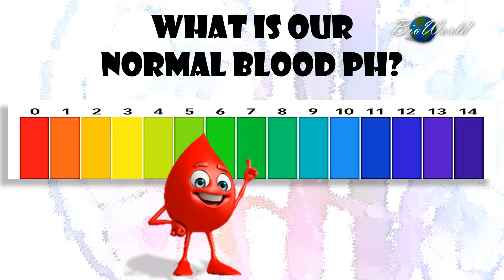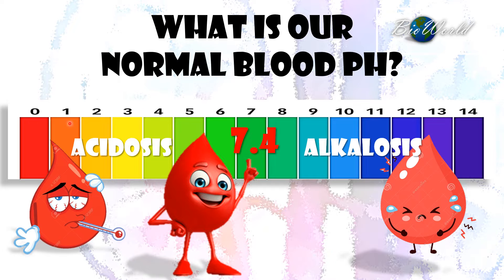What is our normal blood pH? It's actually within the range of 7.4. A blood pH that is below 7.4 can lead to blood acidosis, while a blood pH above 7.4 will lead to alkalosis.